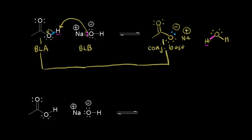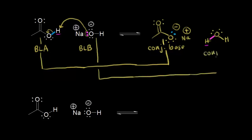For hydroxide: hydroxide on the left side functioned as a base, so the conjugate acid must be on the right side. If you add a proton to OH-, you get H2O. So water is the conjugate acid. So we've identified our conjugate acid-base pairs.